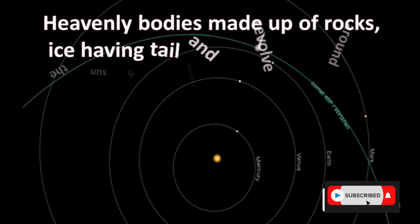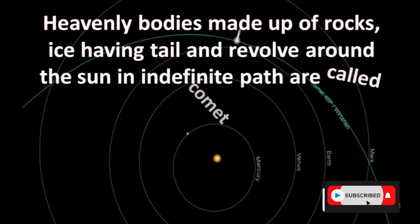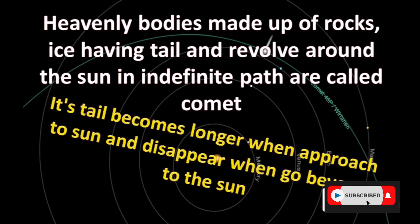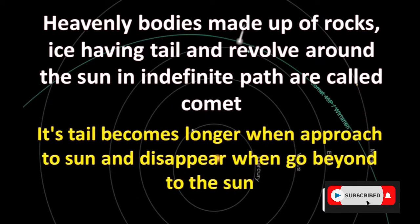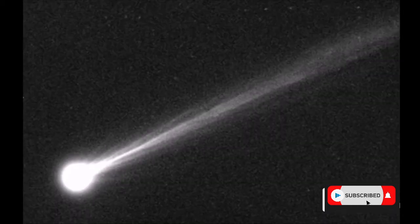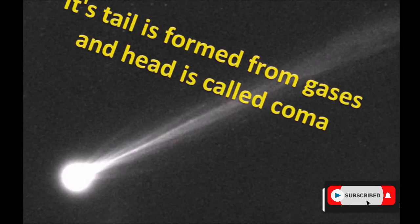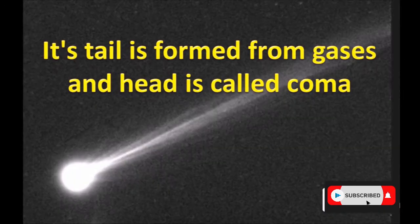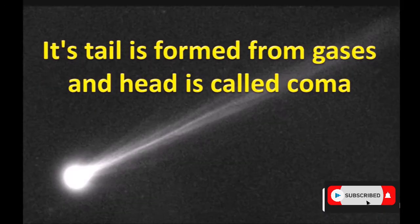Heavenly bodies made up of rocks and ice, having a tail, which revolve around the sun in a definite path are called comets. Comets are made up of ice and rocks. The tail becomes longer when a comet approaches the sun and disappears when it moves away. The tail is formed from gaseous substances and the head is called the coma.